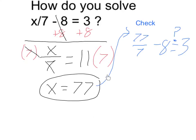Now, a quick check will confirm that for us. If I plug 77 into my original equation here, I know that 77 divided by 7 is 11, and 11 minus 8 is going to equal 3, so it checks out.